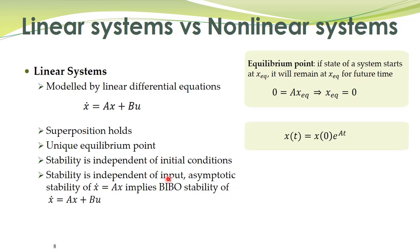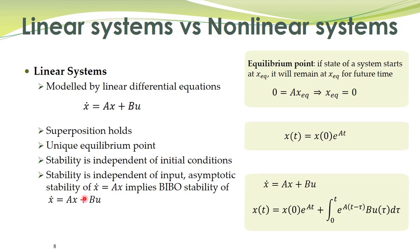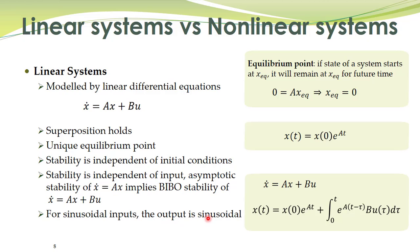Stability is also independent of the input to the system. If this system without input is stable, then it will remain stable for any bounded input — for any bounded input the trajectories will remain bounded. This is also apparent from the solution to this state equation. Furthermore, if you apply a sinusoidal input to a linear system, the output is always a sinusoid of the same frequency as the input.